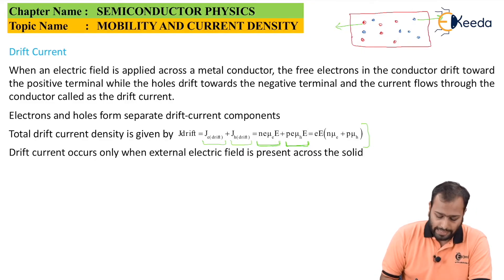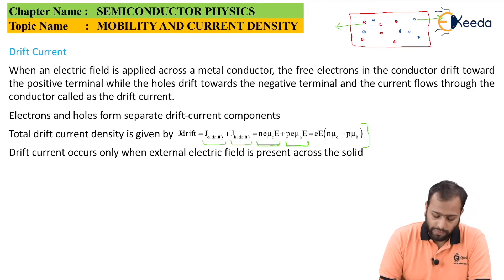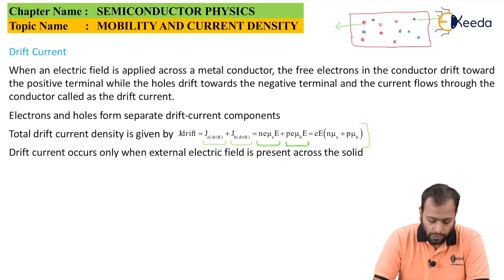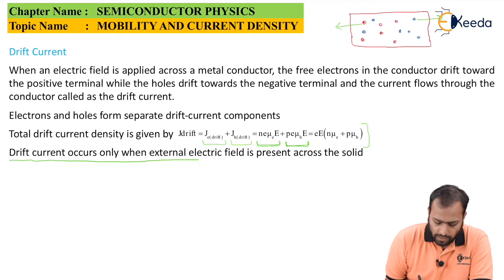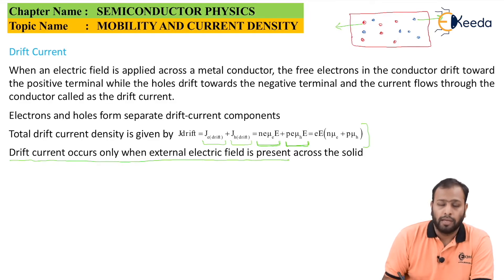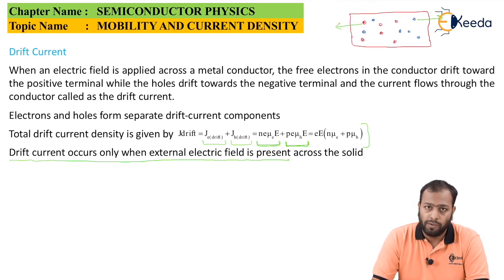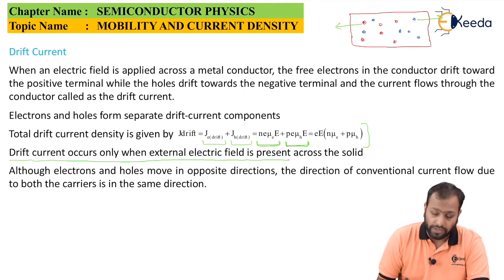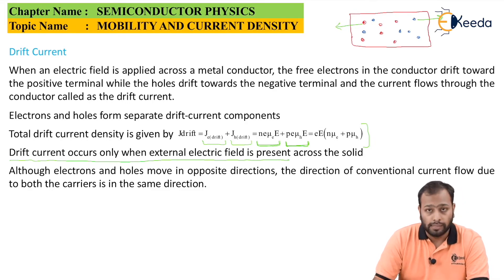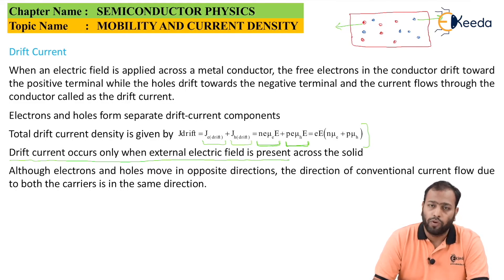Drift current only occurs when an external electric field is present across the solid. If no external field is present, there is no driving force for the electrons and hence no drift current. Also, although electrons and holes move in opposite directions, the direction of conventional current flow due to both carriers is in the same direction — we always take the direction of conventional current, not the actual electron flow.